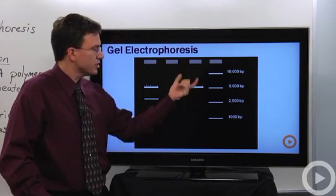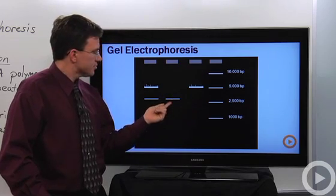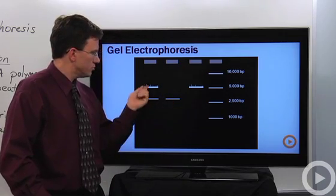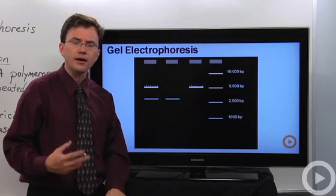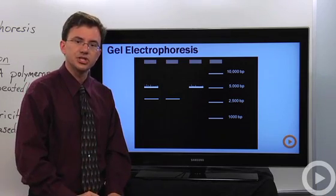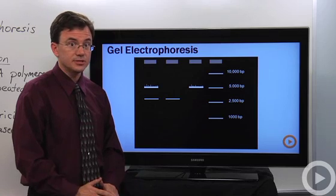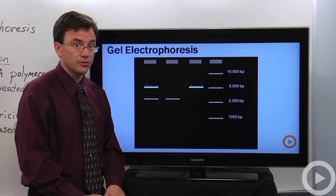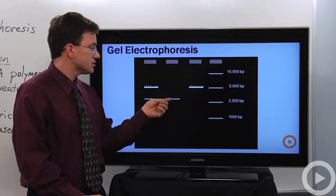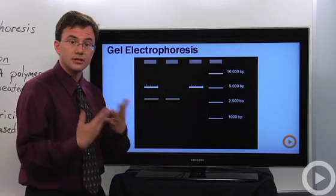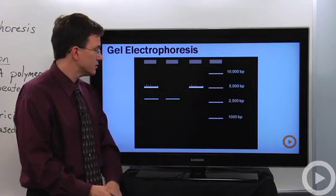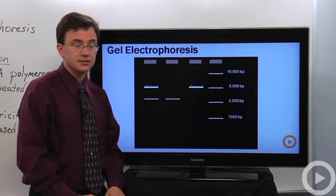Now this person here, we only see one band. This person here, we see one band. This person, we see two. Why is that? Everybody has two copies of every gene. This person has two copies of the long version. They're homozygous for this particular condition. This person here is homozygous for the short version, i.e. not having the cancer. This person here is heterozygous.